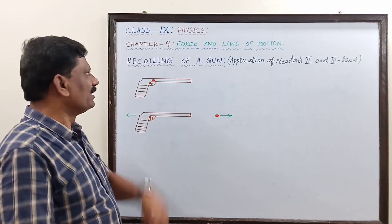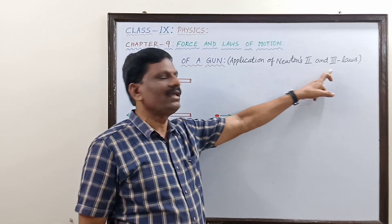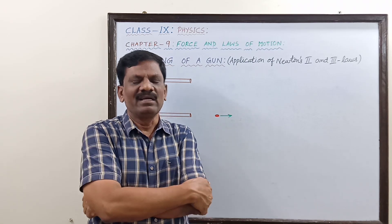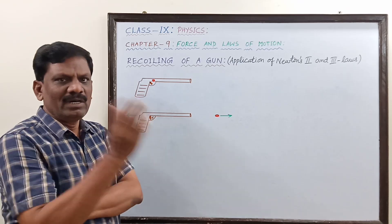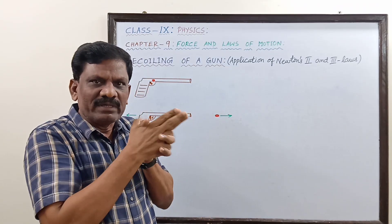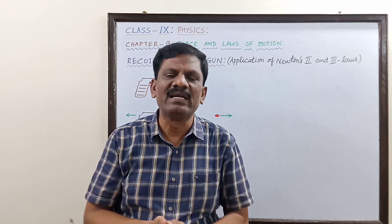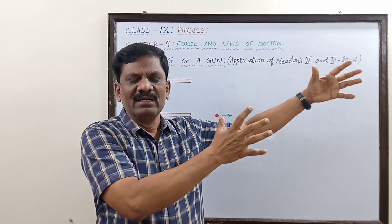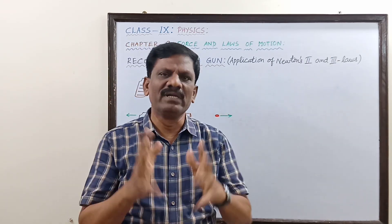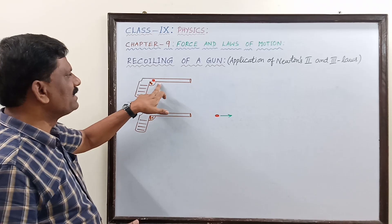We are going to understand a concept called recoiling of a gun, which is an application based on Newton's second and third law, as well as the law of conservation of momentum — very important for exams. You must have watched movies in which whenever a gun is fired, the bullet goes forward and the gun recoils back with a jerk in the backward direction. In warfields, cannons fire a shot and jerk in the reverse direction. This is called recoiling of the gun.